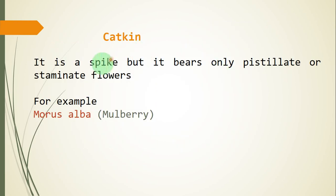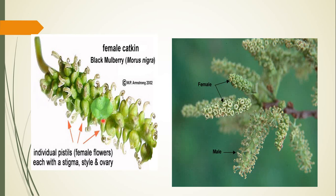The third type is catkin. Catkin is just like a spike but it bears only pistillate or staminate flowers — either male flowers or female flowers. Staminate is male and pistillate is female. For example, Morus alba (mulberry, called 'toot' in Urdu) and Morus nigra for black mulberry. You can see individual pistillate flowers — it is one single inflorescence with many flowers on the main stock without pedicel.